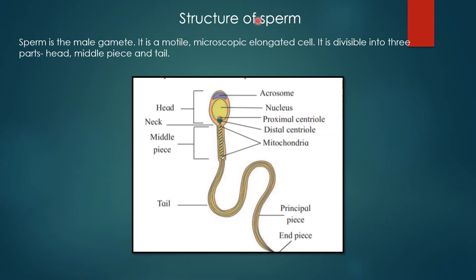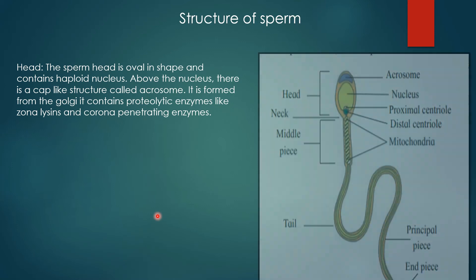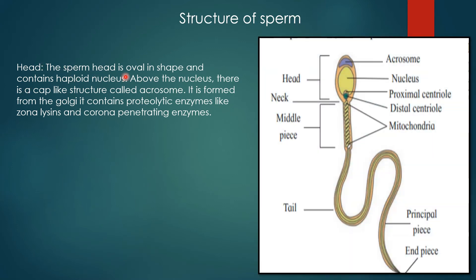Let's understand the structure of sperm. The sperm is the male gamete. It is motile and microscopic. It is divisible into three parts: head, middle piece, and tail. The sperm head is oval in shape and consists of the haploid nucleus. Above the nucleus there is a cap-like structure called the acrosome, formed from the Golgi complex. It contains proteolytic enzymes — zonalicine for breaking down the zona pellucida — and a corona-penetrating enzyme. The sperm has to penetrate the egg, crossing the corona radiata and zona pellucida layers.